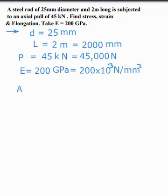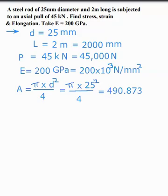So area is equal to, for that, π D square divided by 4. This is for circular cross section. Is equal to π into D, it is 25 square divided by 4. So it will be 490.873 mm square. Then next find out stress.